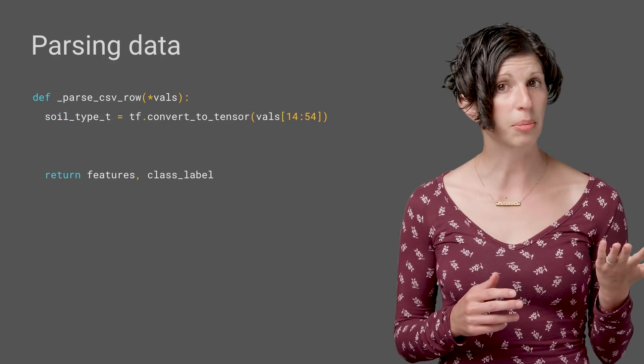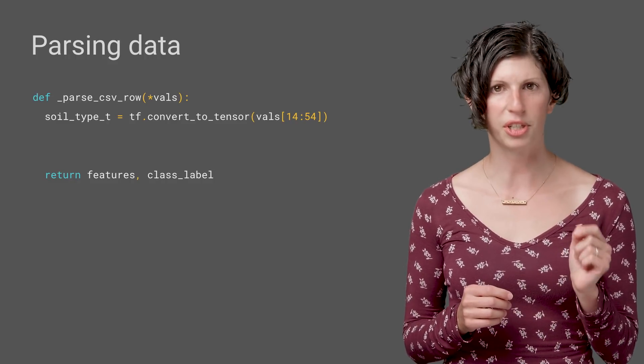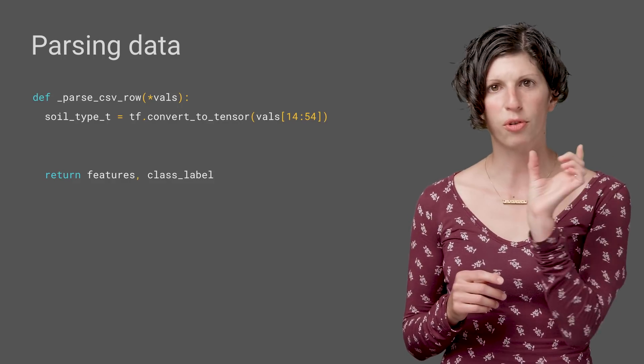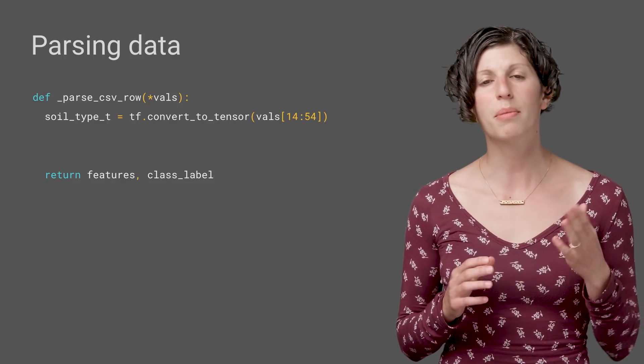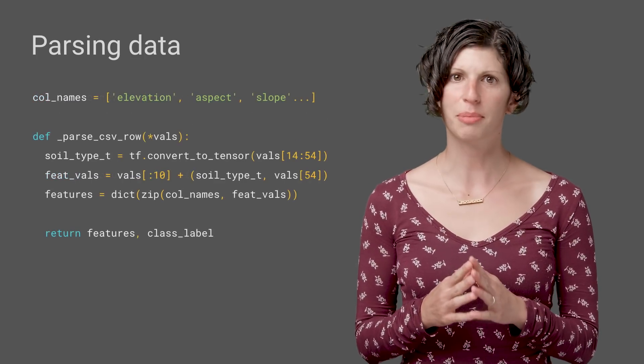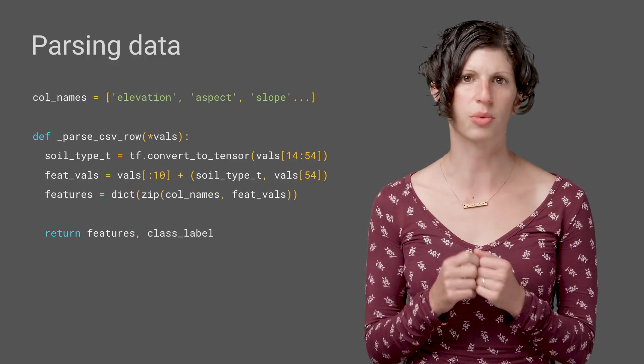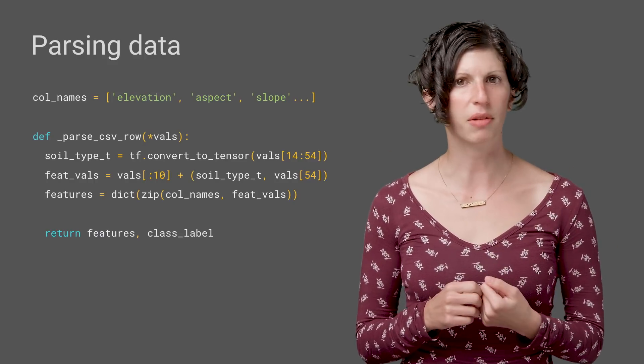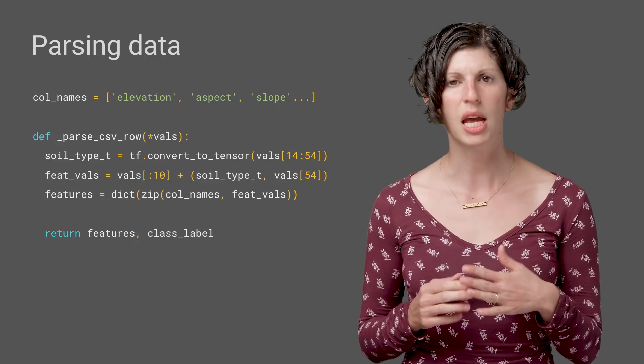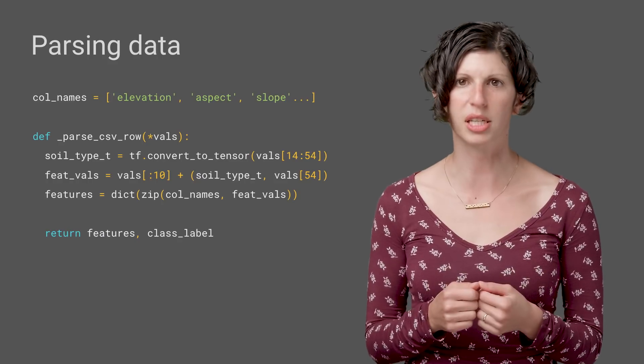So, for example, if you read over the details of the data set, you will see that the soil type is a categorical feature that is one-hot encoded. It is spread out over 40 of our integers. We combine those here into a single length 40 tensor, so that we can learn soil type as a single feature, rather than 40 independent features. Then we can combine the soil type tensor with the other features, which are spread out over the set of 55 columns in the original data set. We can splice the tuple of incoming values to make sure we get everything we need, and then we zip those up with human-readable column names to get a dictionary of features that we can process further later.